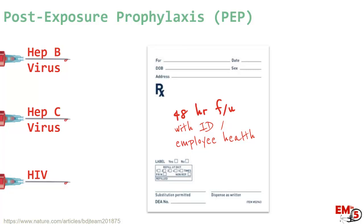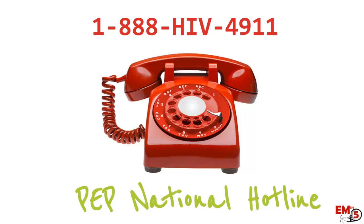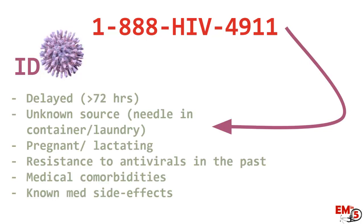One really nice resource available 24/7 is the CEP National Hotline, specifically for clinicians. If you have any questions, it's an odd case, or you just don't remember this stuff, give them a call — they can go through the case with you and tell you exactly what to do. If you have infectious disease on call, that can be helpful as well. Things to run by them include delayed exposures, patients with medical comorbidities, pregnancy, or lactation, or if they've been on antivirals in the past with known resistance or bad side effects.